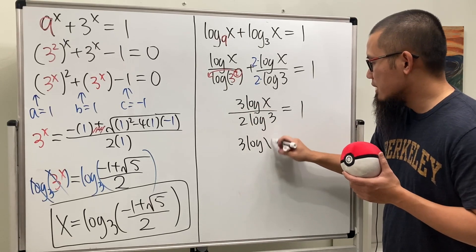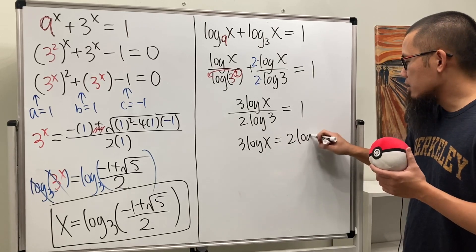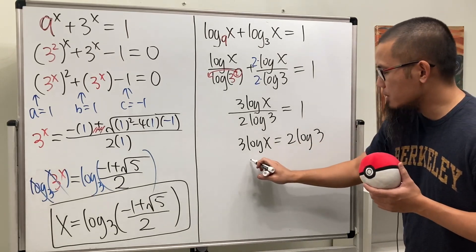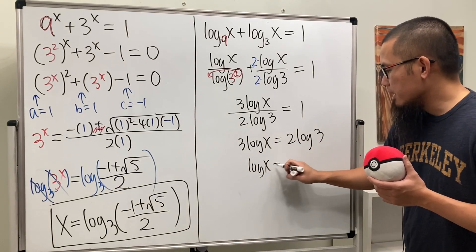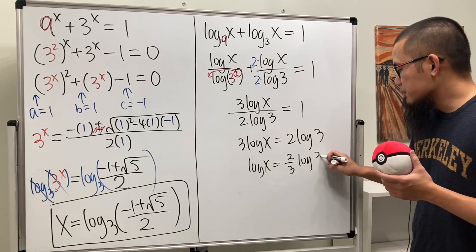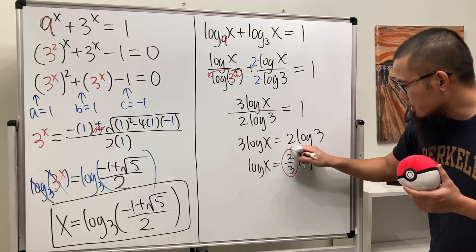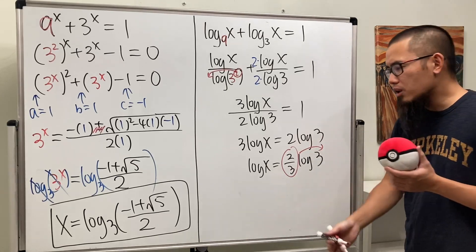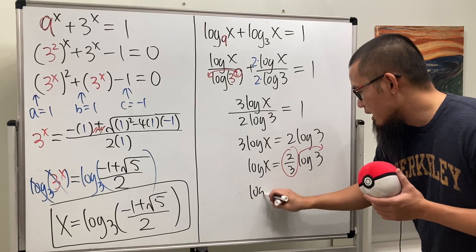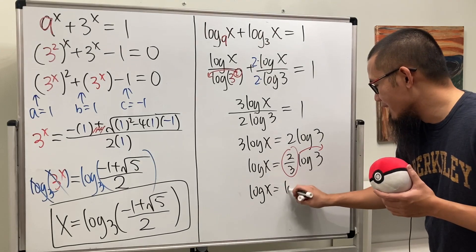Divide both sides by 3, we have log of x being equal to 2 over 3 log of 3. Then we can just bring this to here to make it a power, so we are going to get log of x is equal to log of 3 raised to the 2 over 3 power.